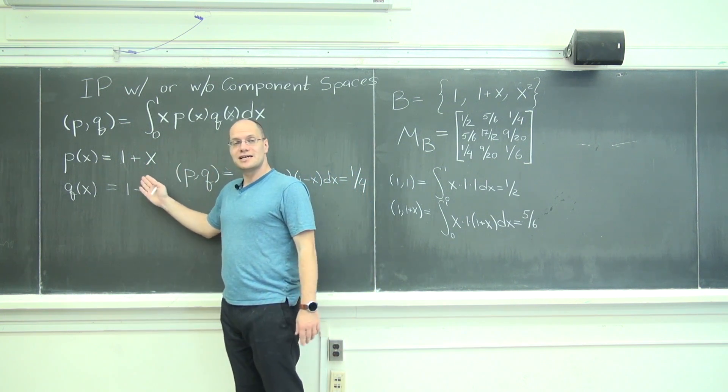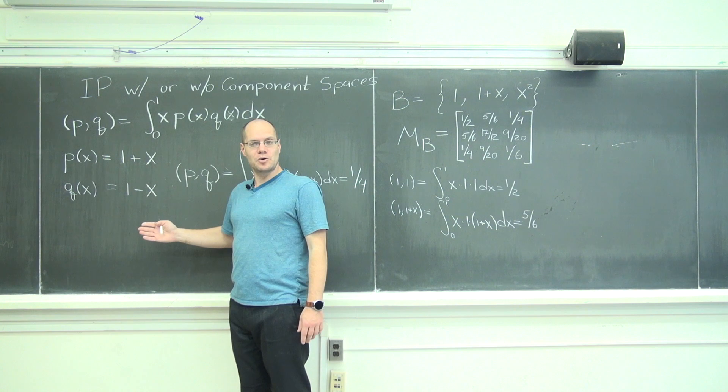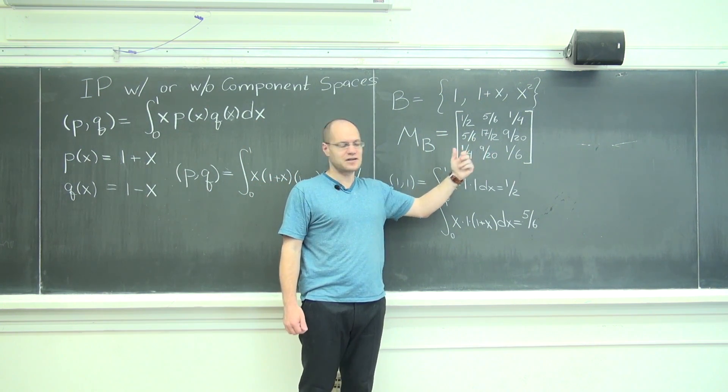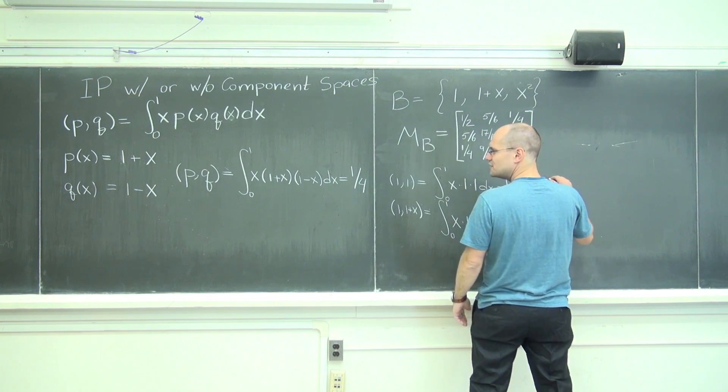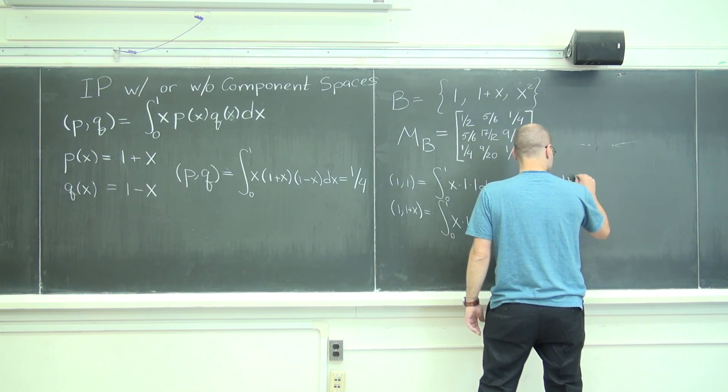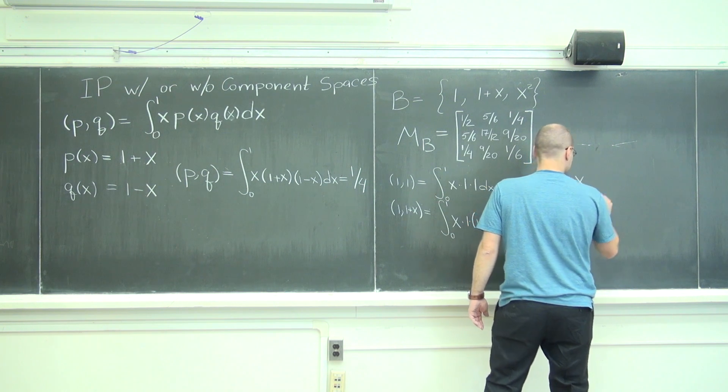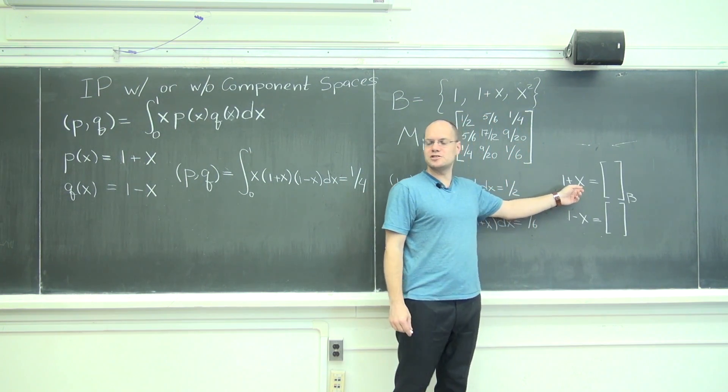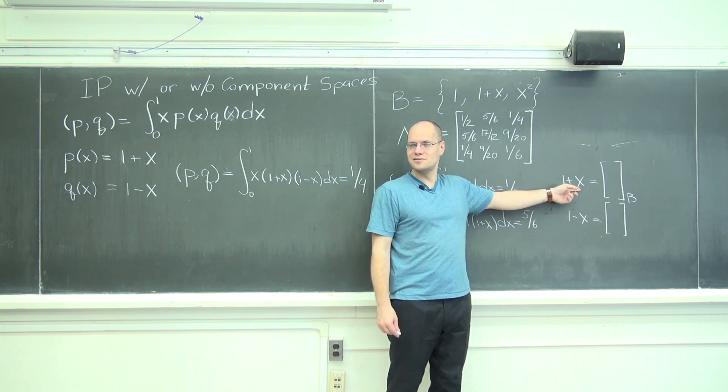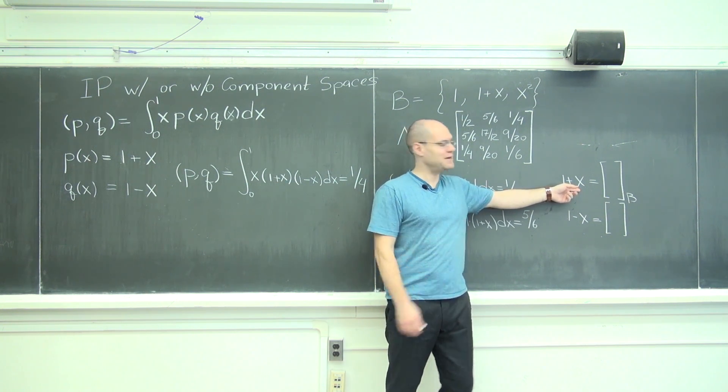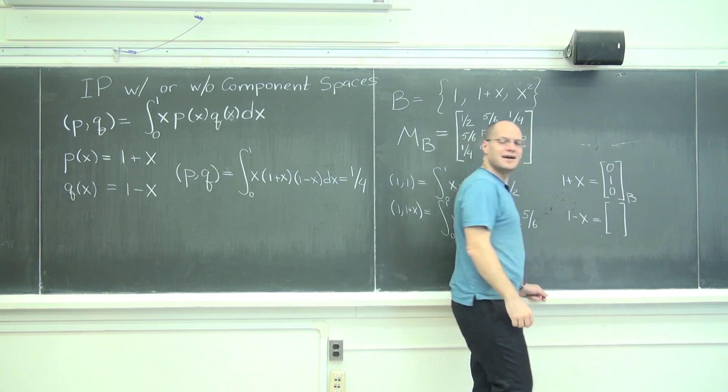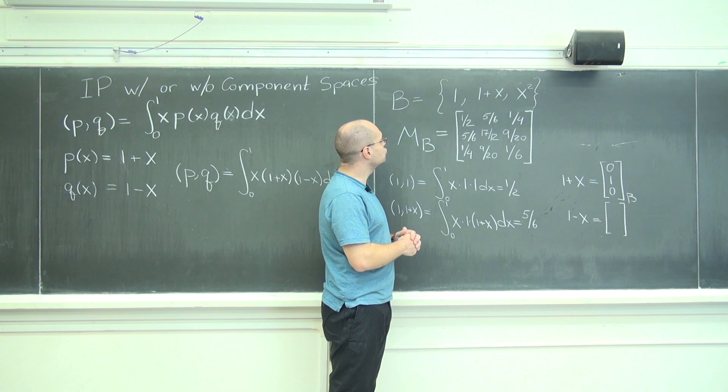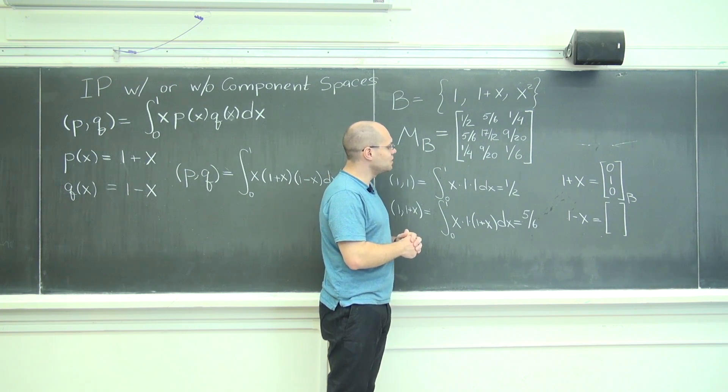But for that I need to represent each one of these in terms of its components. Because we have a recipe for manipulating the components. So we have to figure out what those components are. So we need 1 plus x and 1 minus x. So what are the components of 1 plus x? Super easy. 1, 1, 0. It's one of the basis elements. And what are the components of 1 minus x? 2, minus 1, 0.